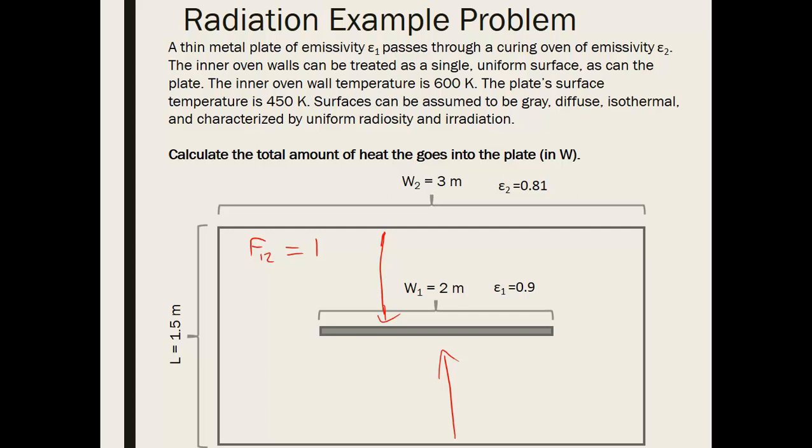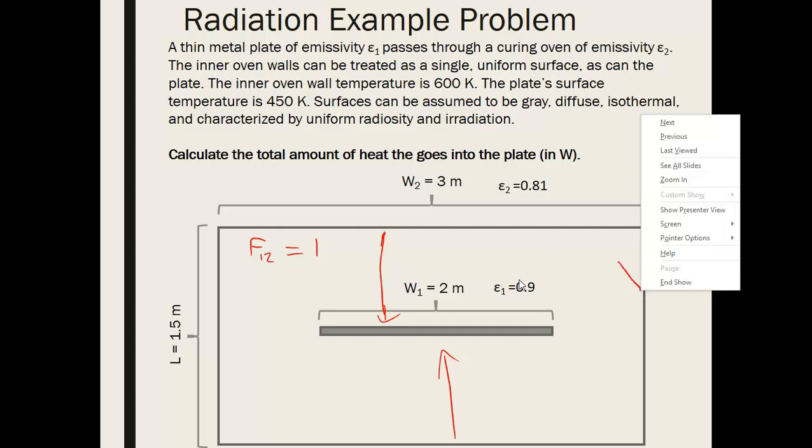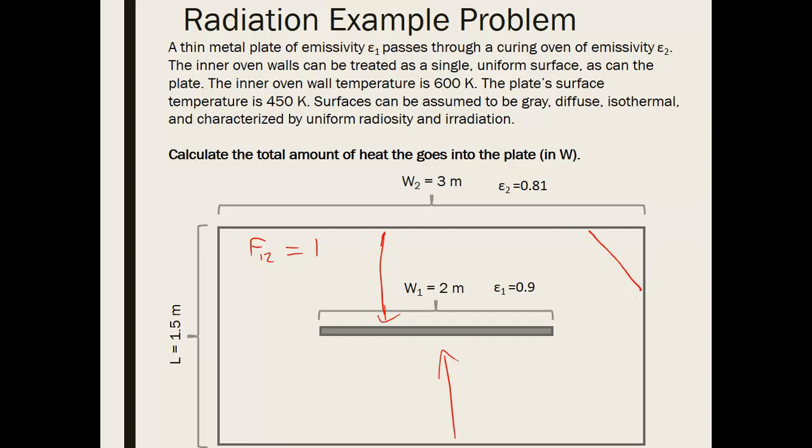And a common misconception is that that view factor is also one, but that is incorrect. So because some of this radiation might be leaving from here. It might be leaving from this wall and going up to this wall, or it might be going from here to here.